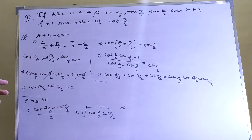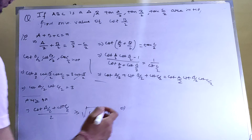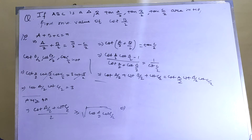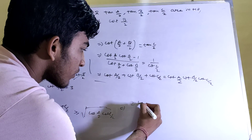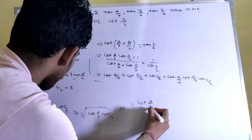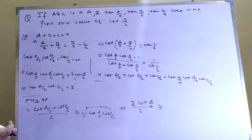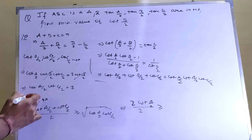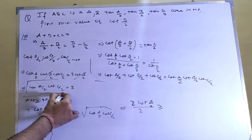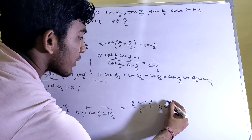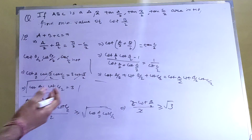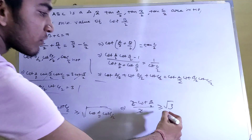Since cot(A/2), cot(B/2), cot(C/2) are in AP, cot(A/2) + cot(C/2) = 2·cot(B/2). Substituting: 2·cot(B/2) / 2 ≥ √[cot(A/2)·cot(C/2)]. Since cot(A/2)·cot(C/2) = 3, we get cot(B/2) ≥ √3. Therefore the minimum value of cot(B/2) is √3.